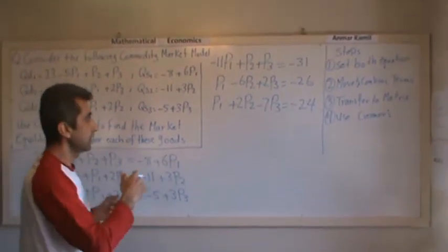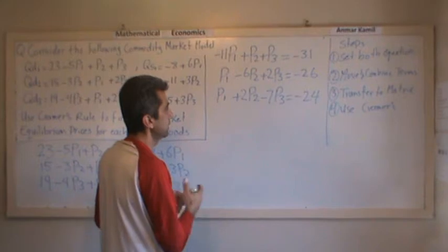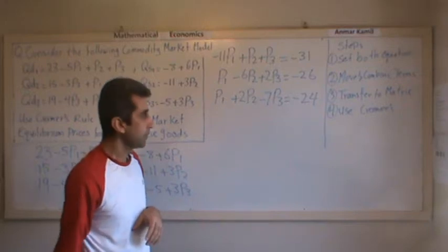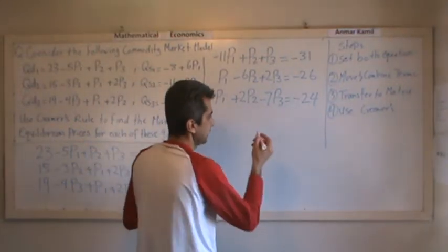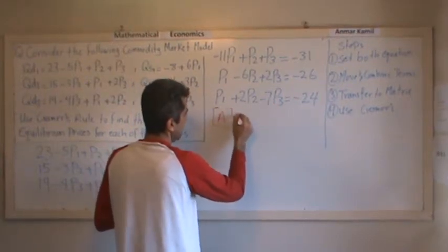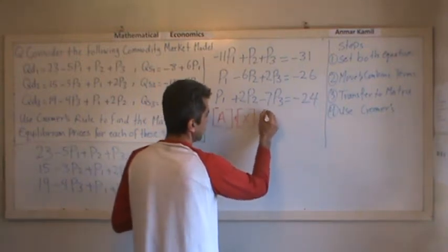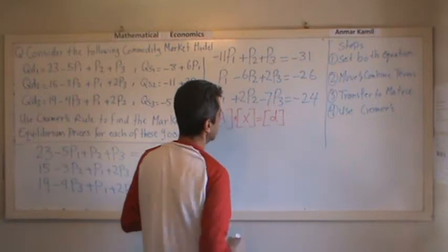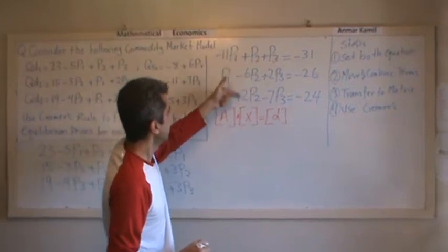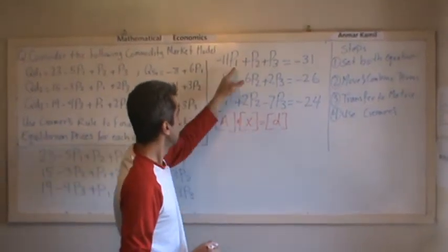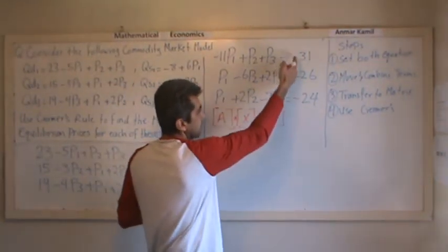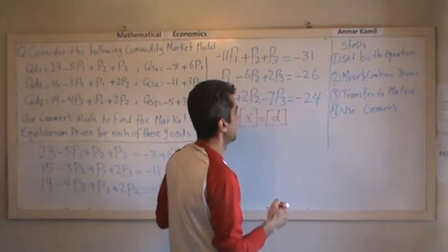After moving variables to one side and constants to the other and combining like terms, I get three equations. Now I'm ready to transfer to matrix format. The matrix format is: matrix A multiplied by matrix X equals matrix D, where matrix A contains the coefficients of each variable, X contains the variables we're trying to solve, and D contains the constants.